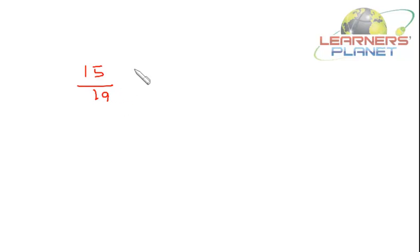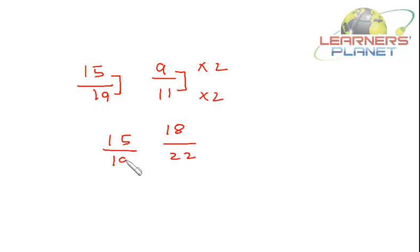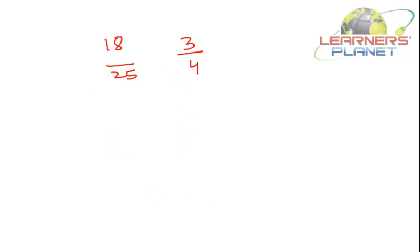Let's take one more problem: 15/19 and 9/11. The difference for 15/19 is 4, and for 9/11 it is 2. By multiplying 9/11 by 2, I get 18/22, where the difference is also 4. Now both have the same difference, and since 18 > 15, the fraction 18/22 is greater. Therefore 9/11 is greater than 15/19.